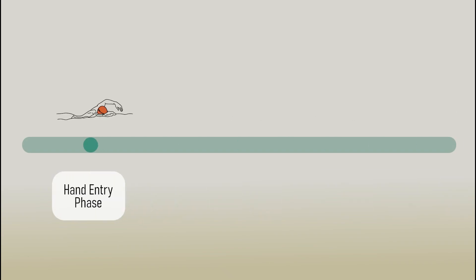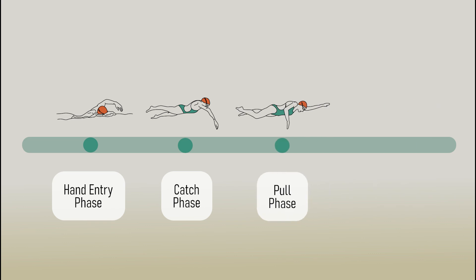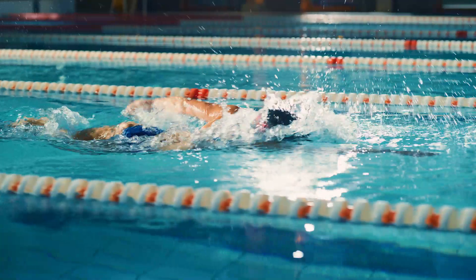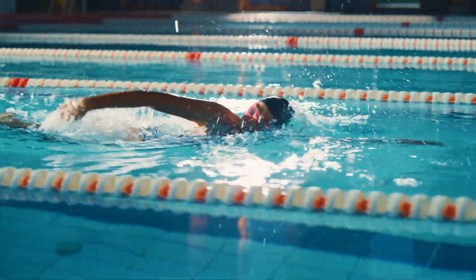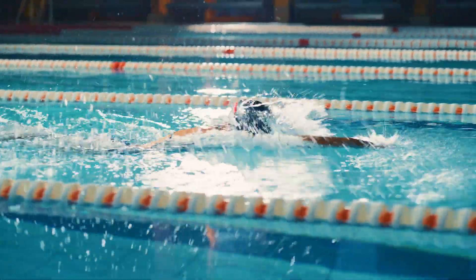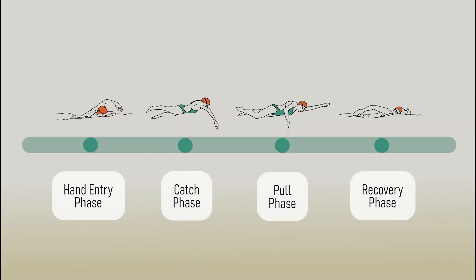The key phases of your swim stroke include the hand entry, the catch, the pull phase, and finally the recovery. The timing of each of these happens in a continuous motion to create a smooth and efficient swim technique. The names of each phase are reasonably self-explanatory, however I'll quickly run through each now.